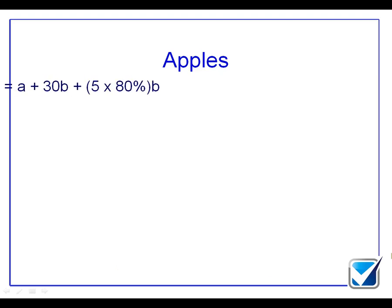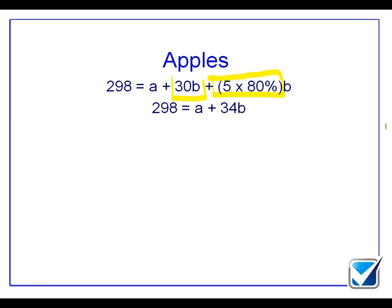And the way that we do this is we will say that 298 equals fixed costs plus some variable costs. Now, the fixed costs will be A. The variable costs are going to be this 30B because the first 30 apples we have to pay full price for. The other five, we only have to pay 80% of the price because we get a 20% discount. So that now means that 298 equals A plus 30B plus 5 by 80% of Bs. And that now means that 298 equals A plus 34B, which suddenly makes this equation seem really simple for me to work out.